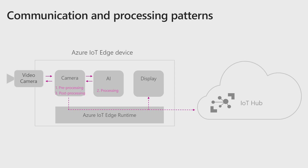For a typical AI application, you would see a pre-processing step, a processing step with the main AI model, and a post-processing step. In our case, pre-processing is downsizing the image. Post-processing — we don't have any in our case, but it could be like showing a rectangle around a face. The processing is the actual model itself.